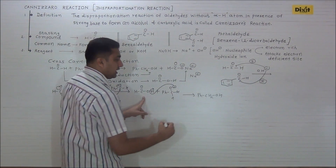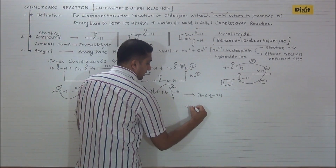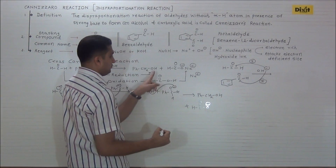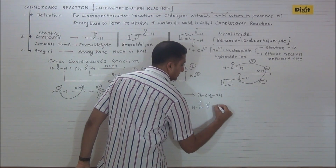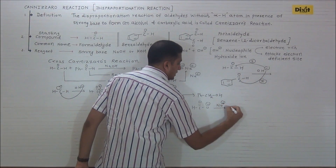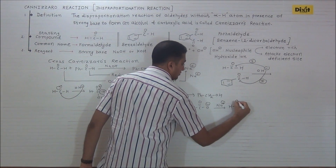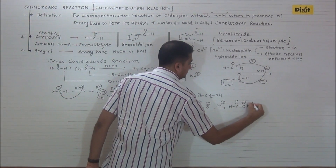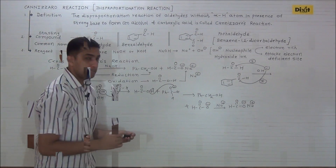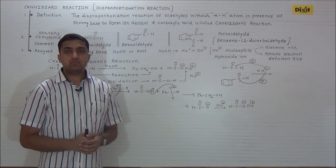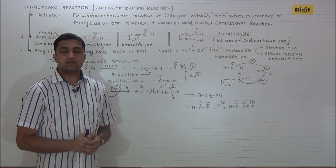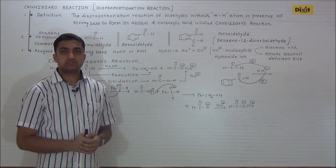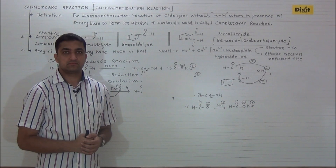The formate ion obtained, in presence of Na⁺, gets converted to sodium formate. In cross Cannizzaro reaction, different molecules undergo oxidation and reduction, hence it is not an example of a disproportionation reaction.